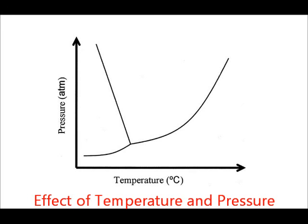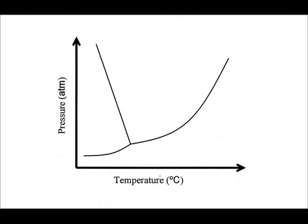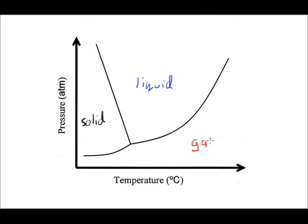Here we'll look at a different type of phase change diagram — one which allows us to look at not only temperature, as we did with the earlier diagram, but it also allows us to consider the role of pressure. On this diagram, let's find where the three different states of matter would be located, applying this to water. In this region, we would be talking about solid water or ice. In this region, we are talking about water in the liquid state. And finally, in this region, we have water in the gaseous state — water vapor or steam.